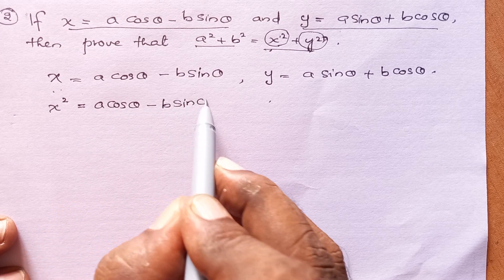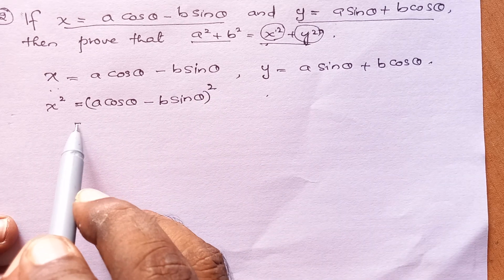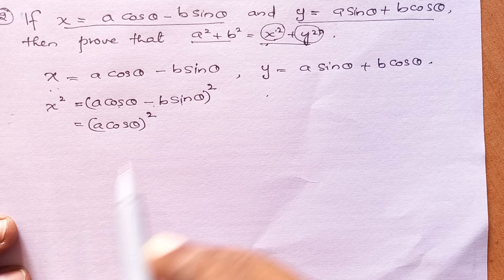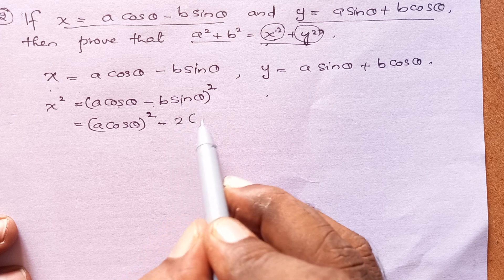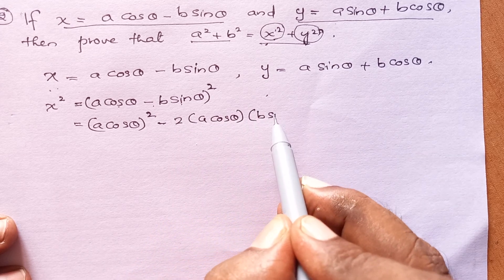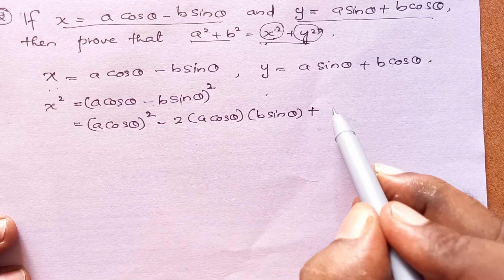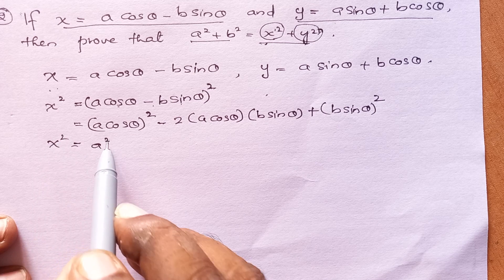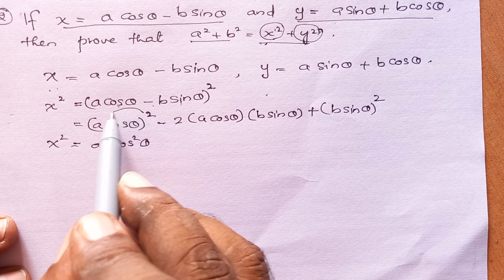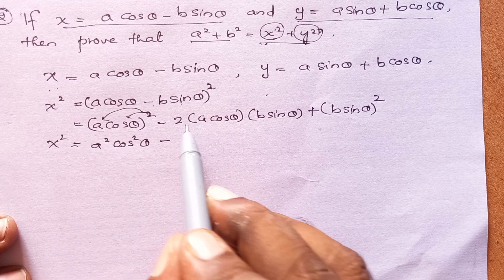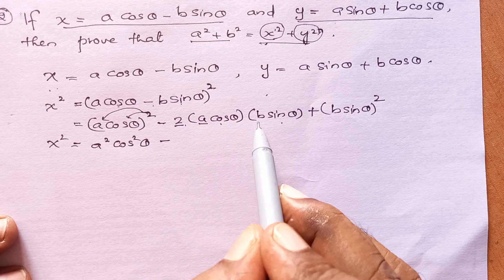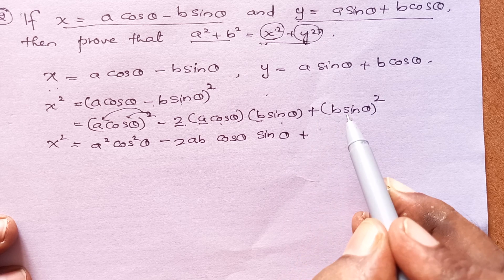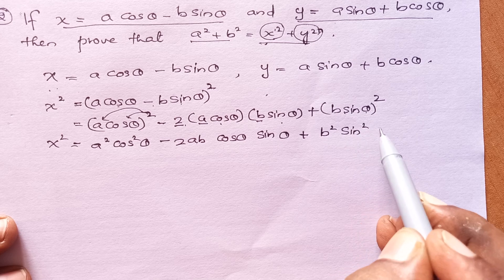x square is a cos theta minus b sin theta, the whole square. This is of the form (a minus b) whole square, which expands to: a square, that is a cos theta whole square, minus 2ab, that is 2 into a cos theta into b sin theta, plus b square, that is b sin theta whole square. So x square equals a square cos square theta minus 2ab cos theta sin theta plus b square sin square theta.